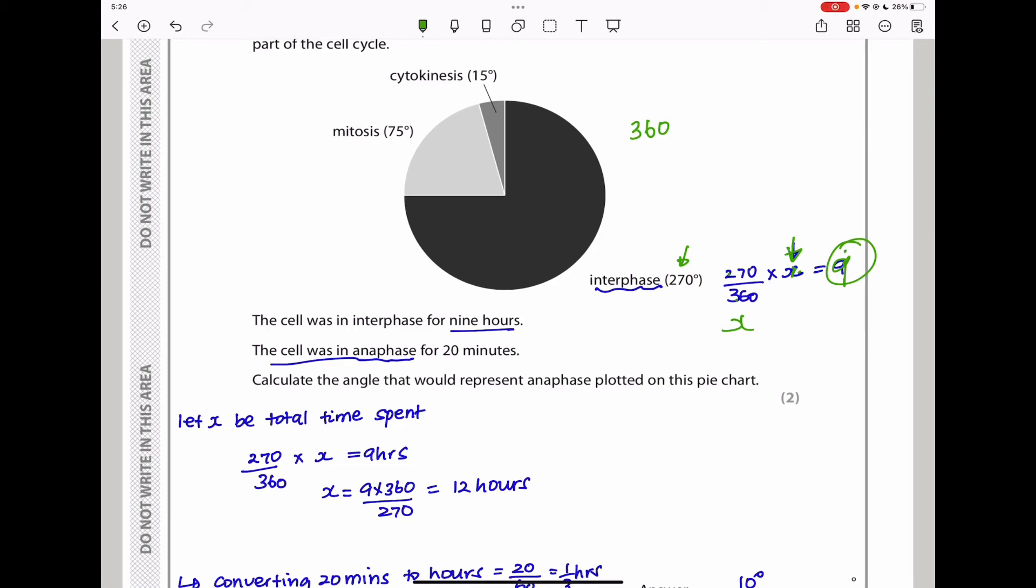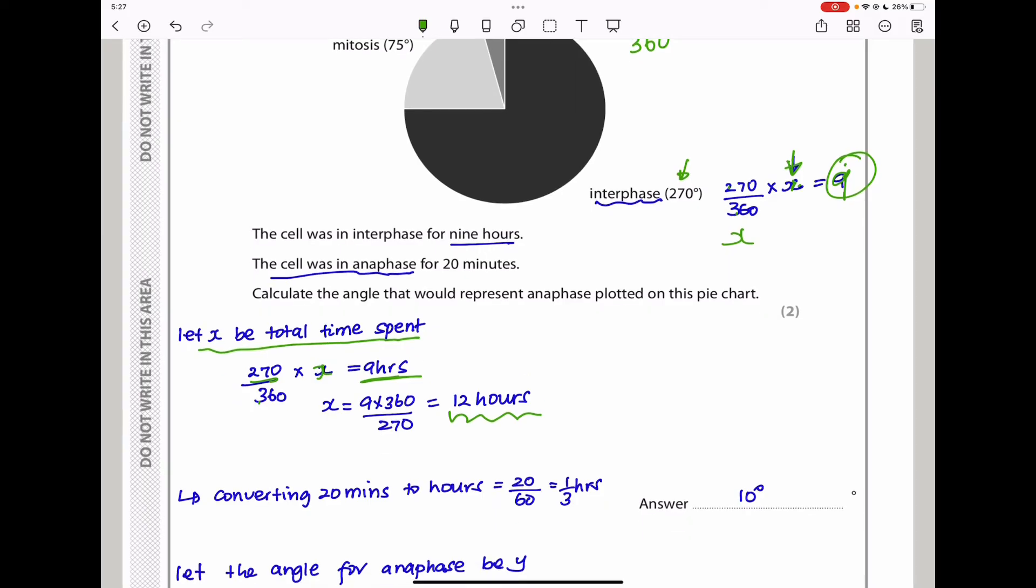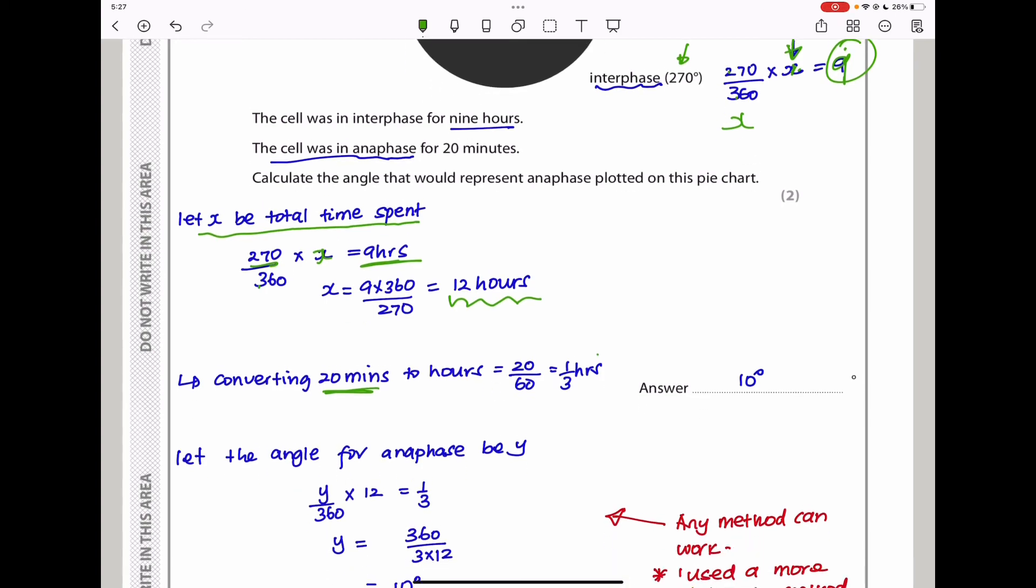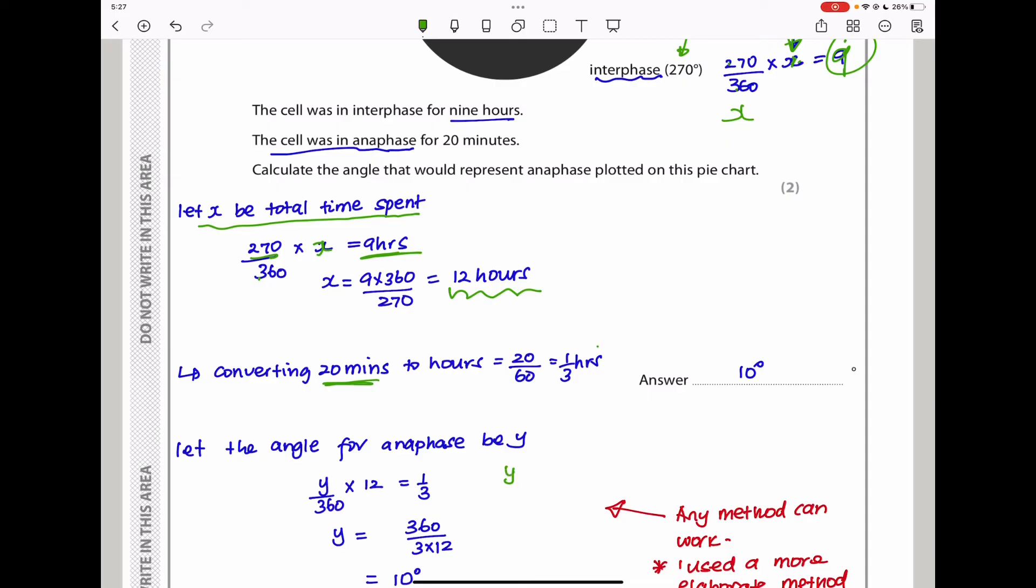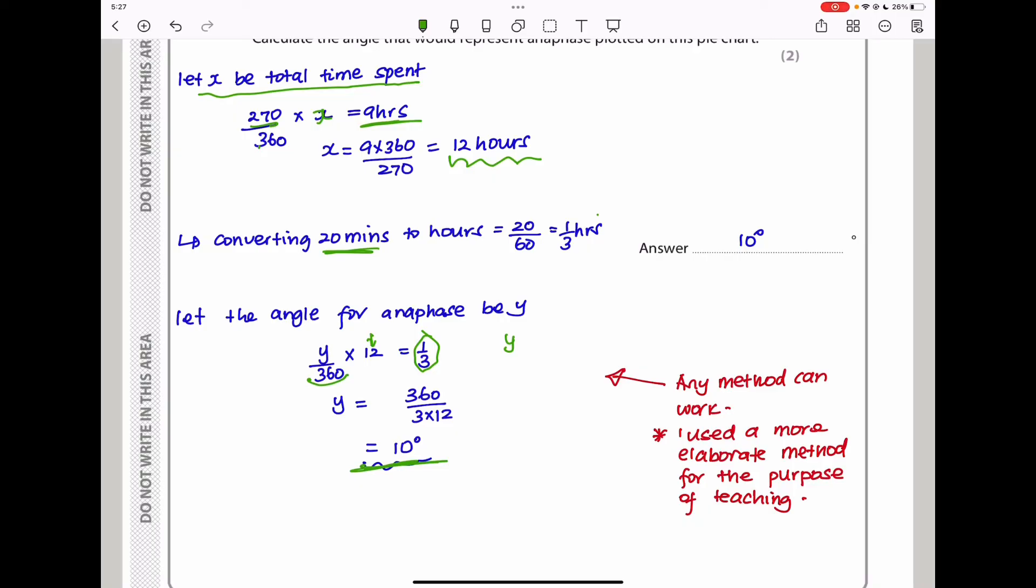The cell was in anaphase for 20 minutes. Calculate the angle that would represent anaphase plotted on this pie chart. Let X be the total time spent. Using the interphase part: 270/360 times the total time gives us nine hours. When I make X the subject, I got the total time spent to be 12 hours. In anaphase it was 20 minutes, so I converted to hours: 20/60 gives me 1/3 hours. Let the angle for anaphase be Y/360 times 12 hours equals 1/3 hours. When I made Y the subject, I got 10. So anaphase should be 10 degrees.